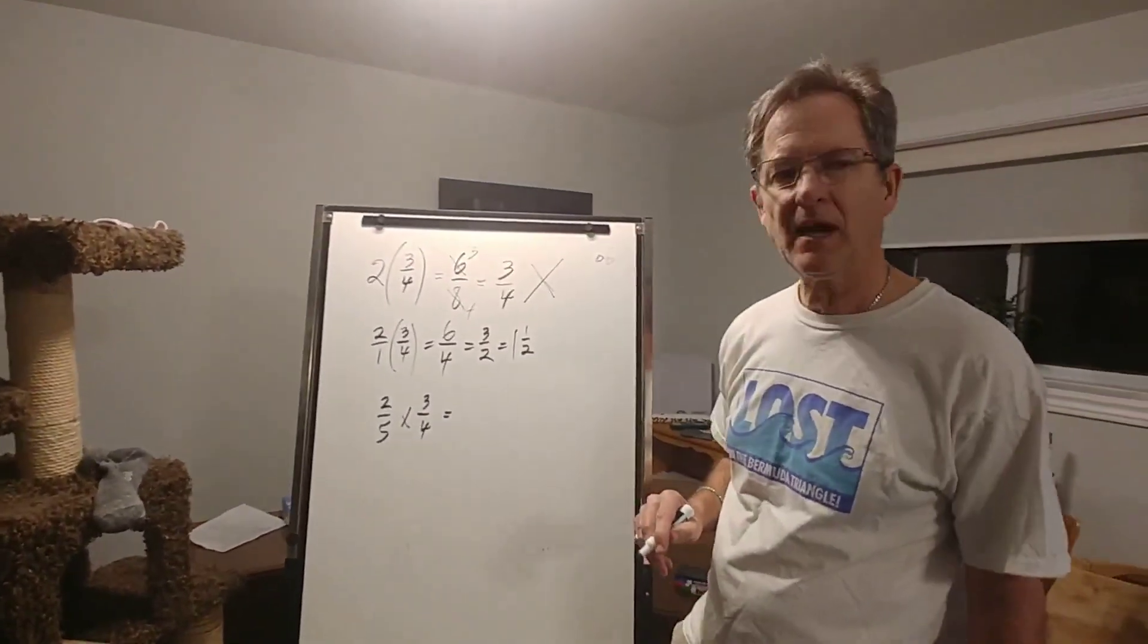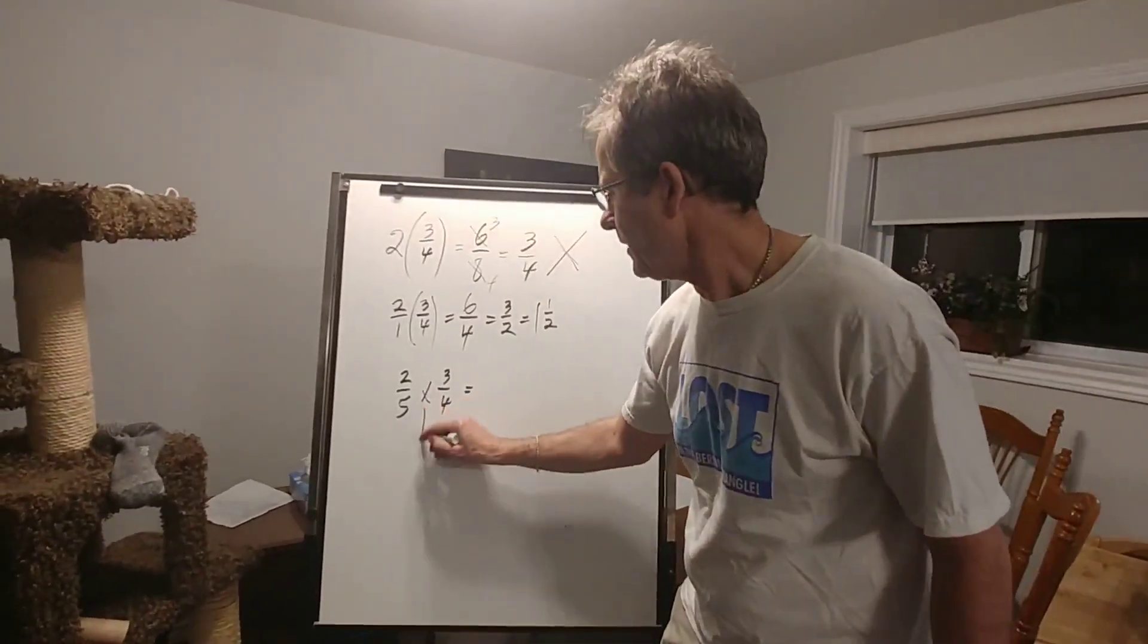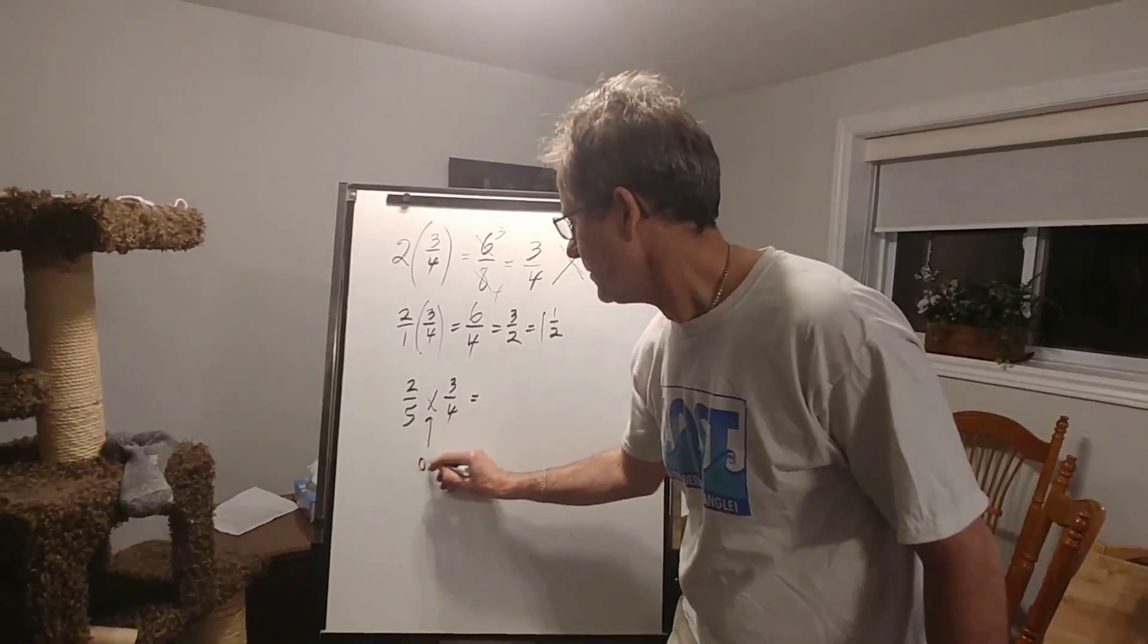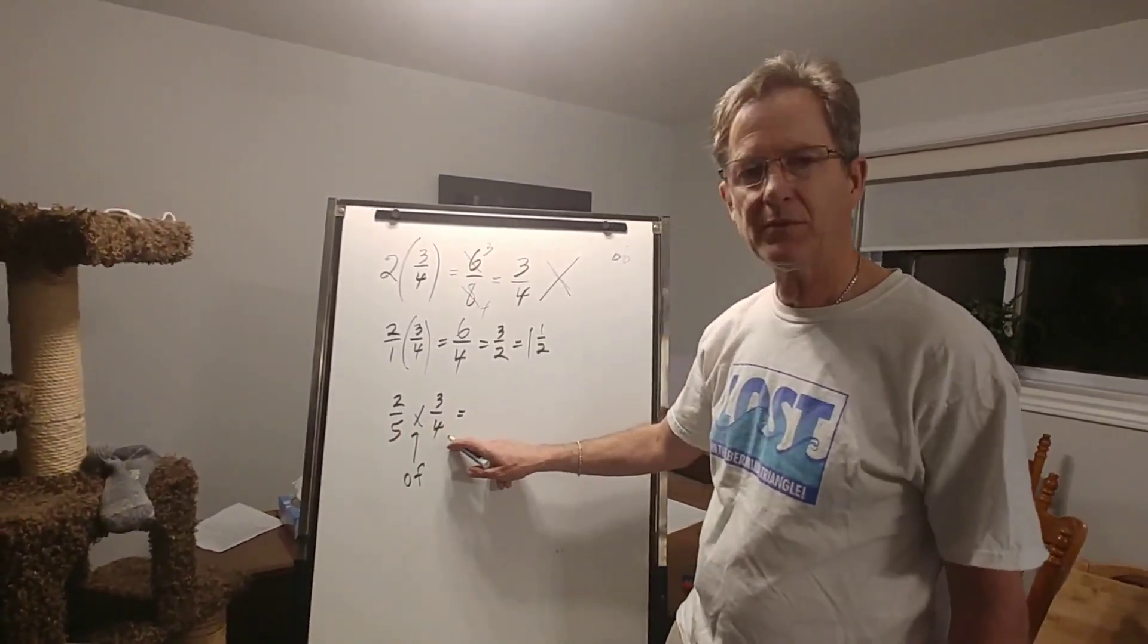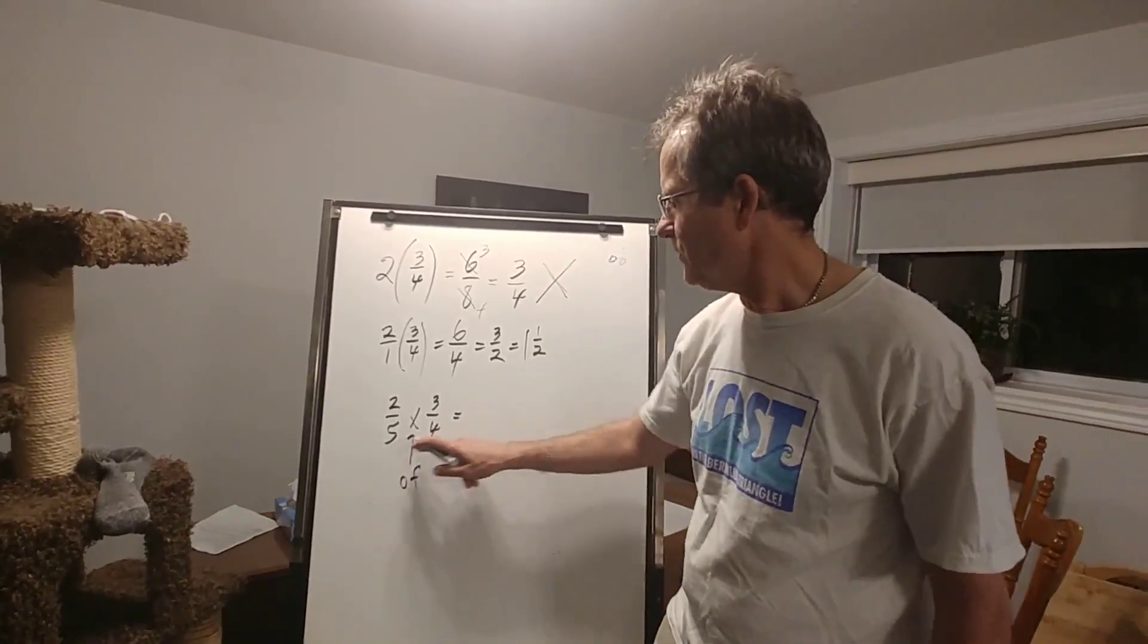Before we work that out, what does that mean? Well, multiplication can be thought of as of. We want two fifths of three quarters. What's two fifths of three quarters?